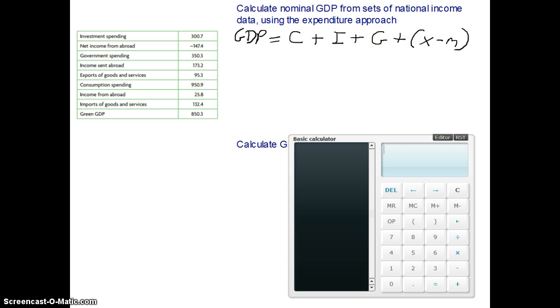So all we have to do is look over here at all the different information in a table. You'll get this in your exam and basically we just need to look where we've got consumption spending. So we've got consumption spending over here, 950.9. We need to add that to the investment spending, 300.7. Find the government spending, there we go, add that onto the figure.